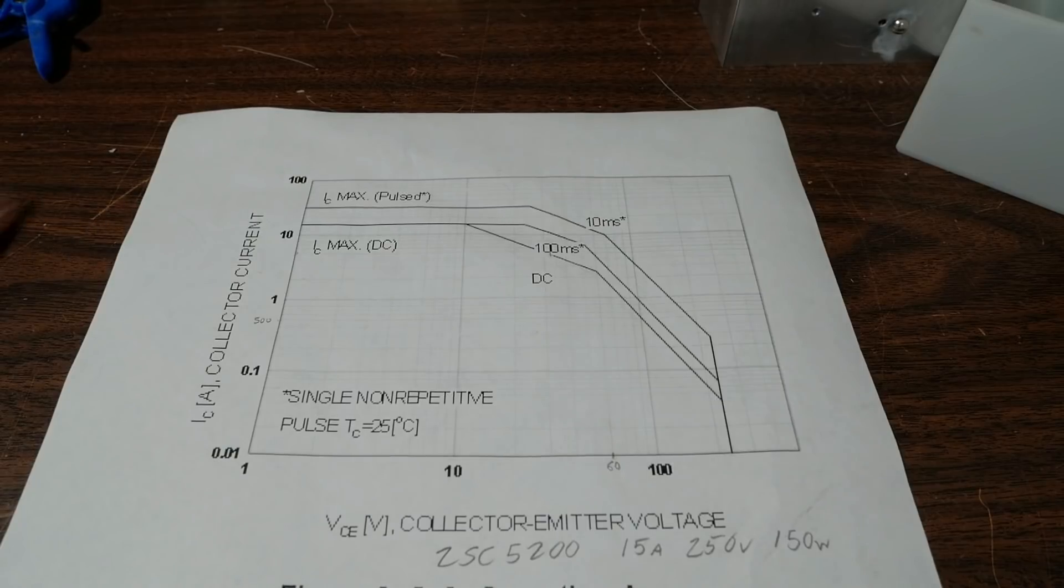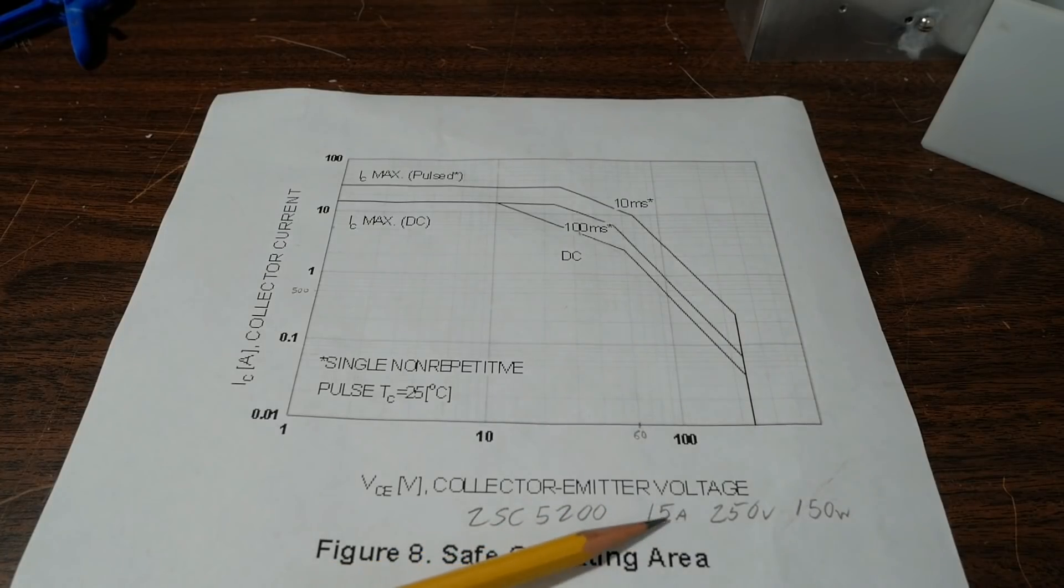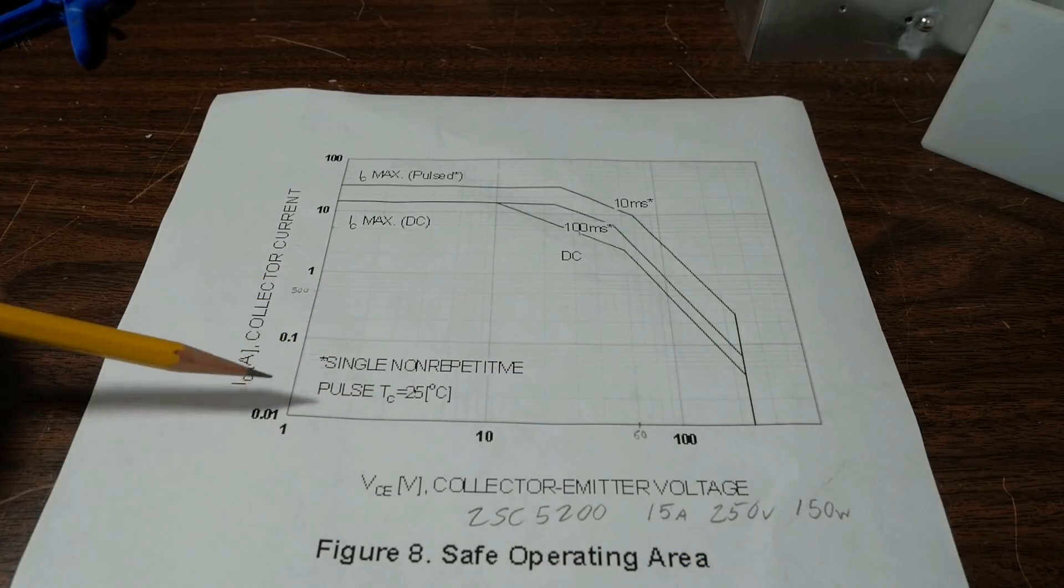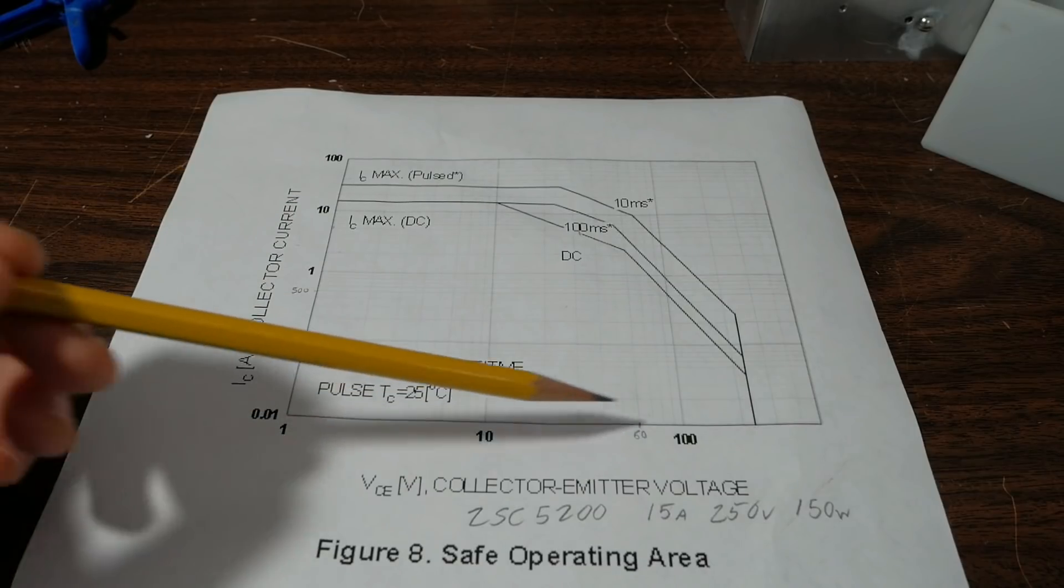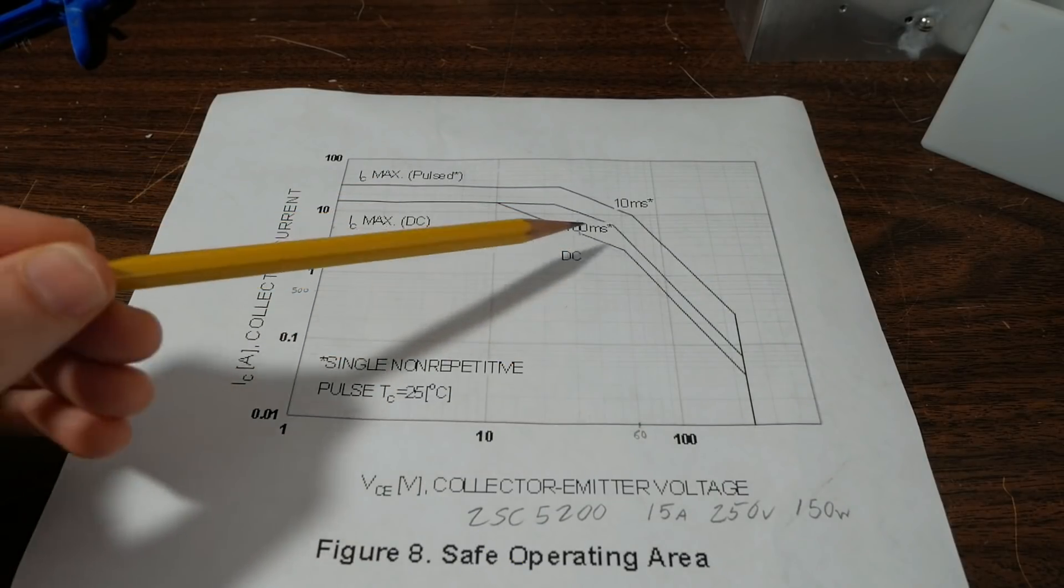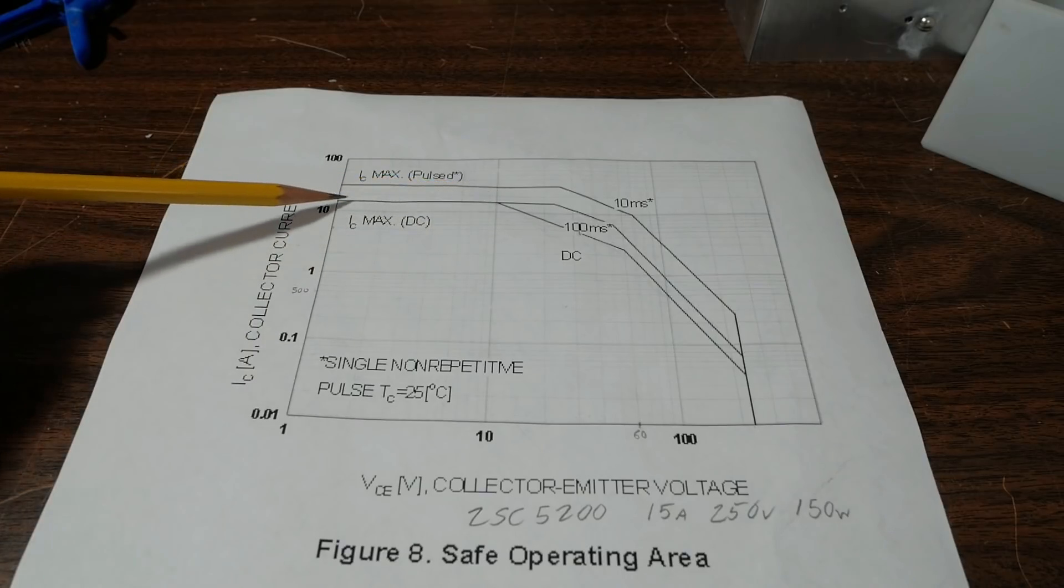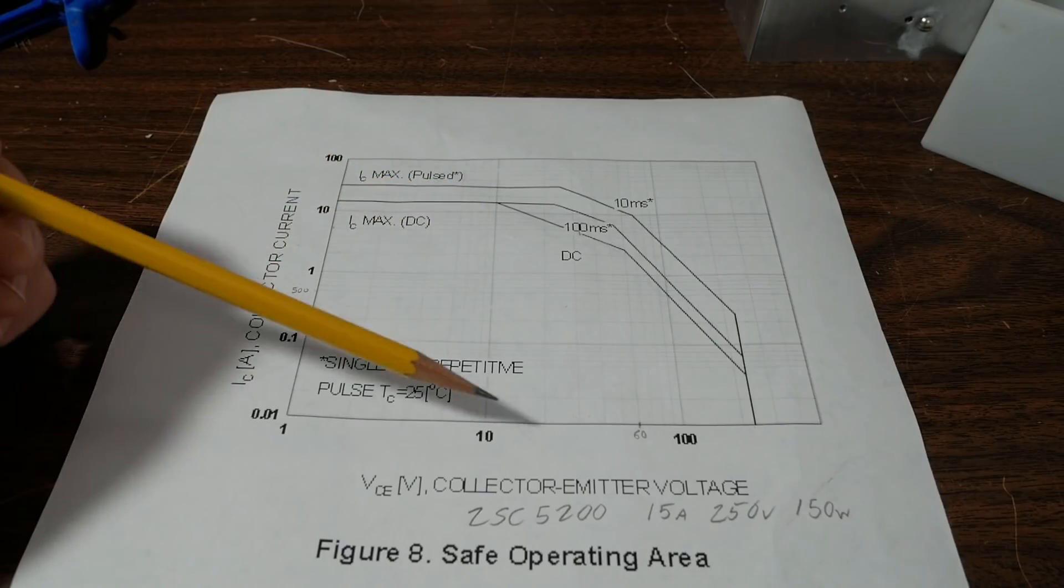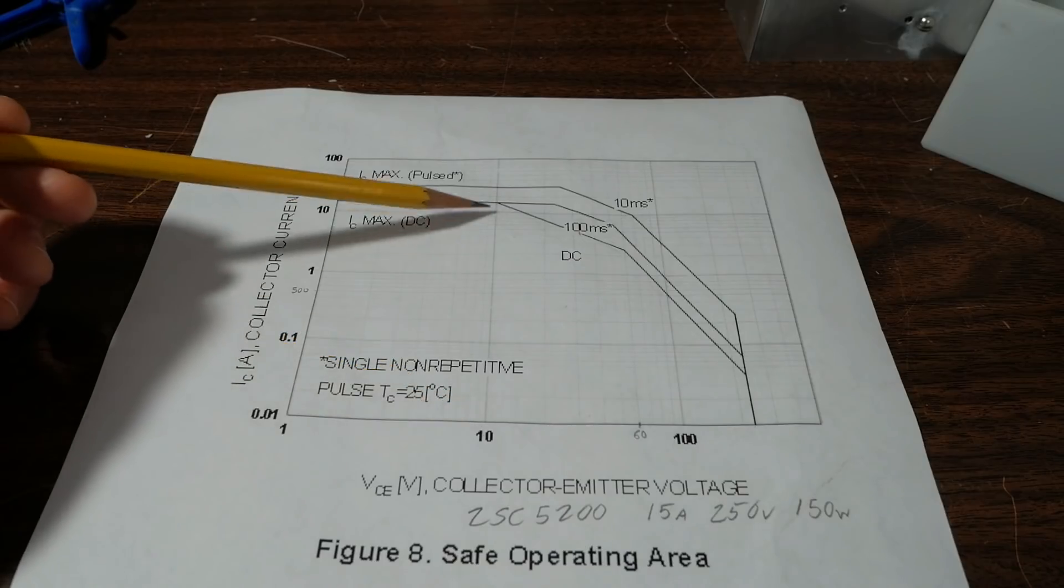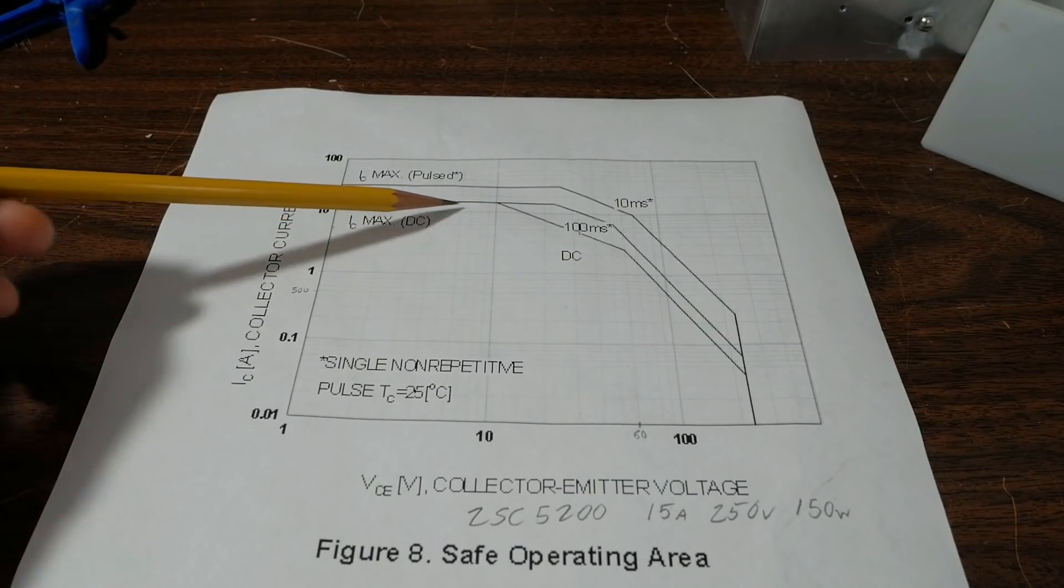What we're looking at now is the safe operating area curves of a 2SC5200 transistor. I think it's 15 amps, 250 volts, 150 watts power dissipation rating. So, what this graph is, it has the current on the y-axis, voltage on the x-axis, and you see these curves here. Well, they're actually straight lines and segments, but what's going on here is when you see these horizontal lines, this is maximum current here. Because we're not hitting a power dissipation issue at the given voltage here, 10 volts and below for the DC line, we can run the transistor at its maximum current if we wish.